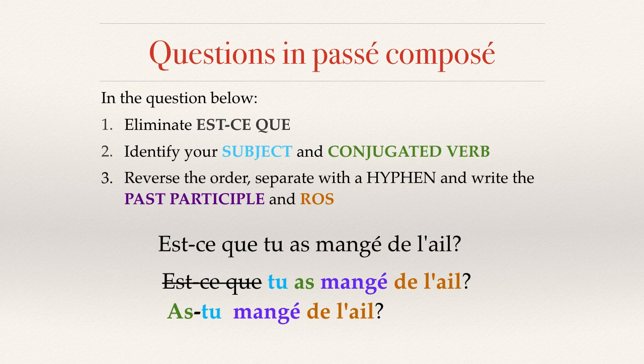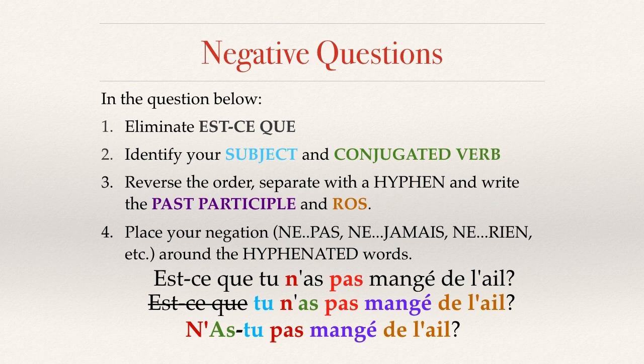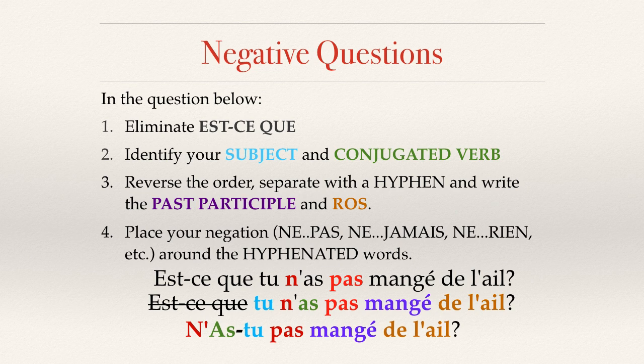Much shorter. If we wanted to make the question negative, we follow the same first three steps, but then take the ne...pas and put it around whatever is hyphenated — so the negation embraces the hyphenated items in your sentence. Feel free to rewind and take notes. If you have questions, send them to me via Edmodo. We've got a quiz or three on the material. Au revoir!